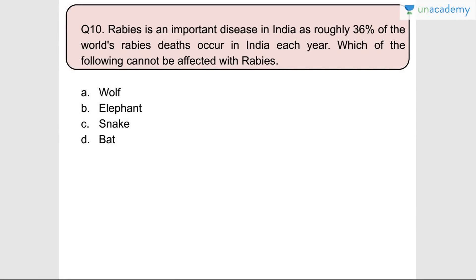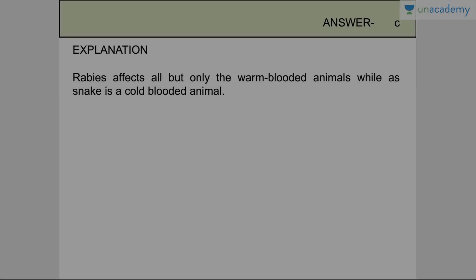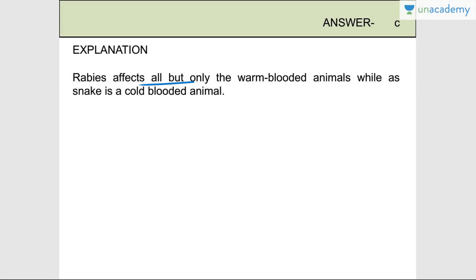Question number ten: Rabies is an important disease in India as roughly 36% of the world's rabies deaths occur in India each year. Which of the following cannot be affected with rabies? Snake cannot be affected because rabies affects warm-blooded animals, while snakes are cold-blooded animals. Answer is C - snake.